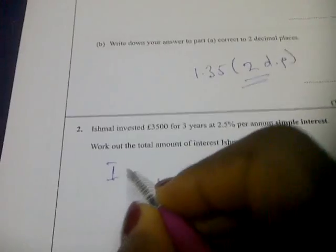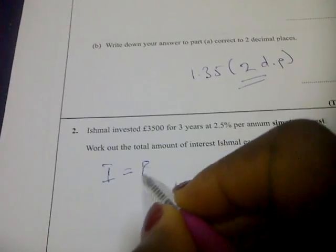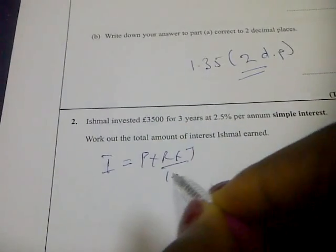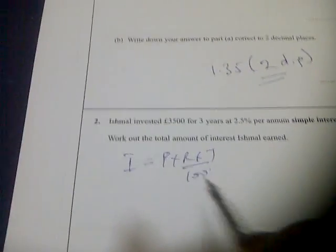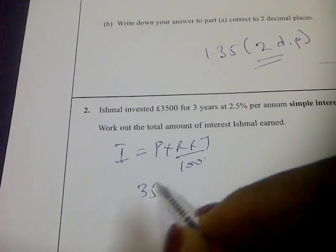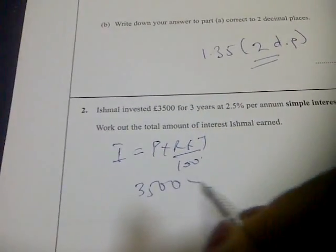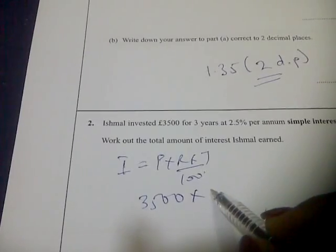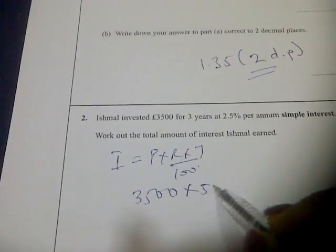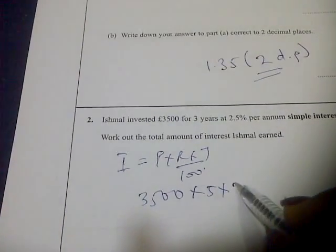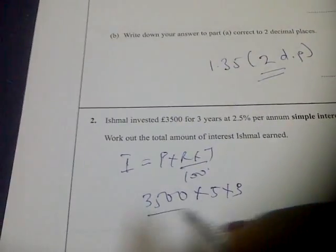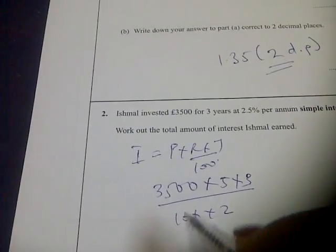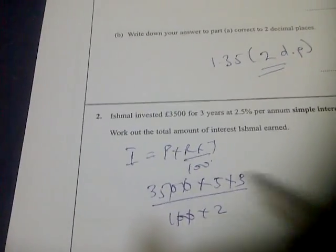Interest equals principal times rate times time over 100. Your principal is 3500, rate is five over two (2.5%), and time is three over 100.